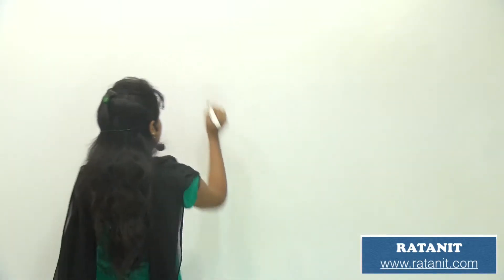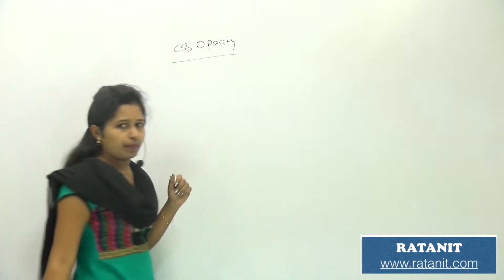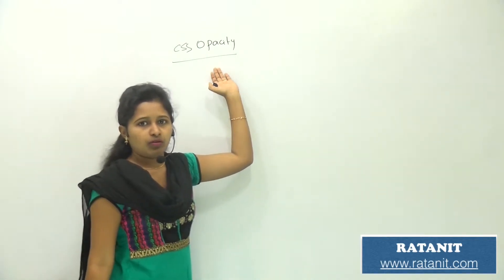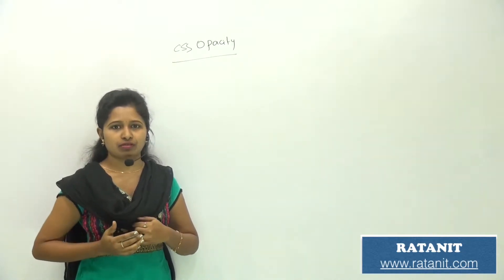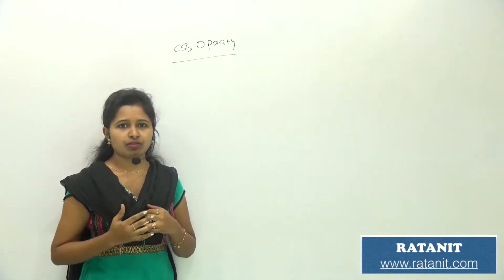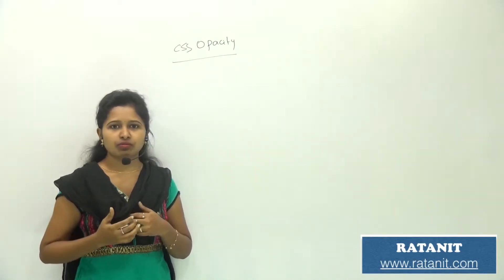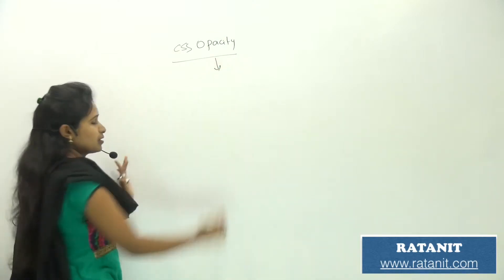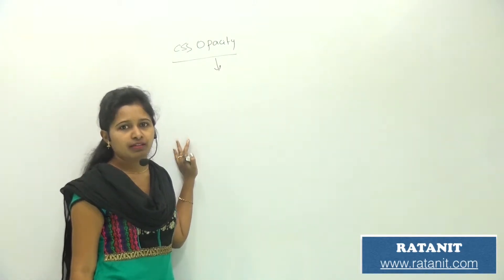Hello everyone, this is Binisha, welcome to RataIT. We are going to discuss opacity in CSS — how opacity values work. First of all, you need to know what opacity is. In a browser, when you open some images, you feel like they are blurred — you can't see the image completely. Some shadows also appear. Opacity means the image is transparent, and by step by step we can control that level.